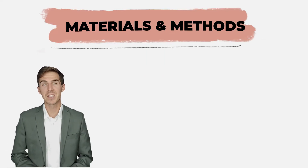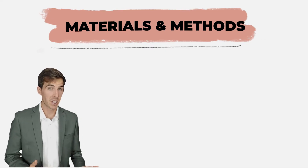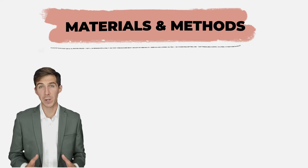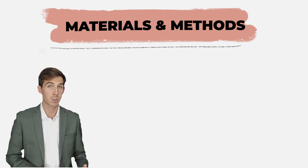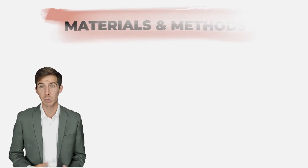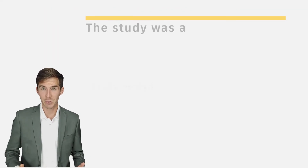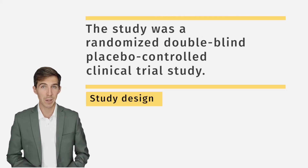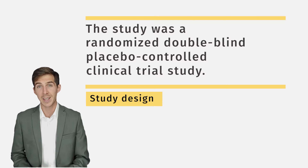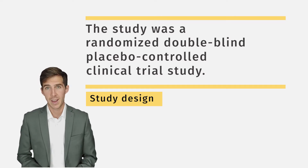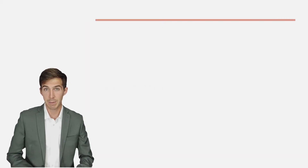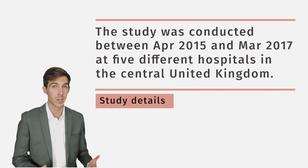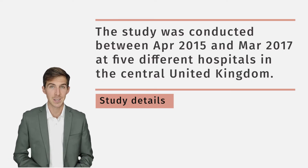Let's move on to Materials and Methods — one of the most important parts of your paper. This section should have enough detail so that another researcher can reproduce your experiments and results. Let's start with study design. In clinical trial papers, you must explain the study design you have employed. In our case, it was a randomized, double-blinded placebo trial. Then you can talk about the location and period in which the clinical trial was conducted, and provide details about the ethical approval obtained for the study.